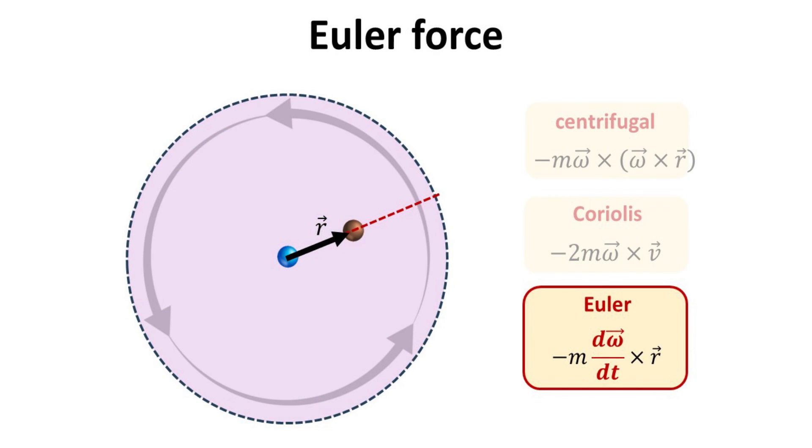Now we are down to the last of these three apparent forces, the Euler force. The Euler force is finite only when there is a change in the angular frequency. For example, when we start spinning the disk, the angular frequency accelerates and the Euler force acts in the azimuthal direction in opposition to the increase in angular frequency. On the other hand, when the angular frequency decelerates, the Euler force acts in the opposite direction.